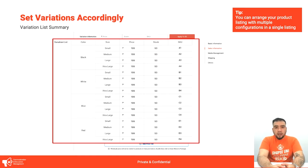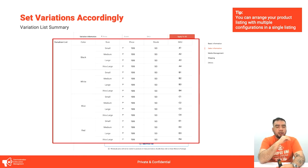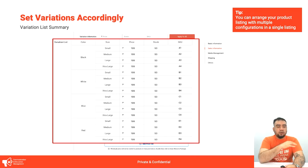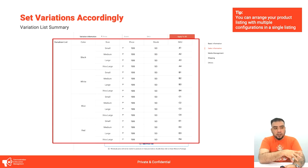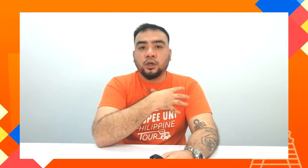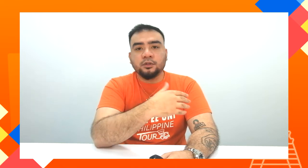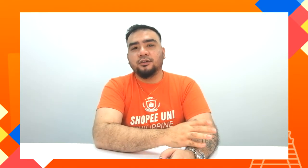Following this setup, your variation table will show color and size as variation types. A final product example shows colors with their corresponding sizes, all at the same price, with stock quantities and SKU codes — so your warehouse team immediately knows that, for example, 'A3' means the large black variant.